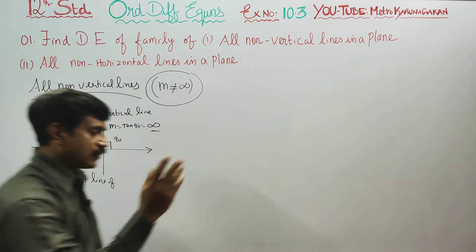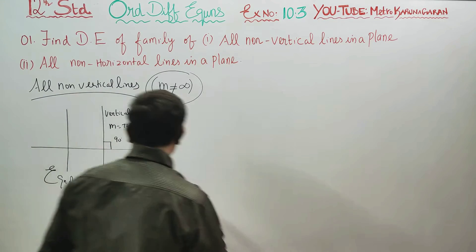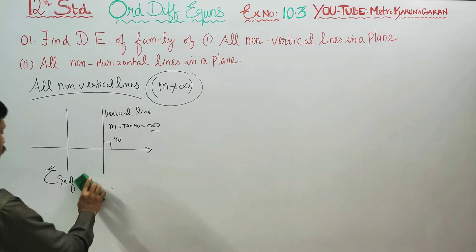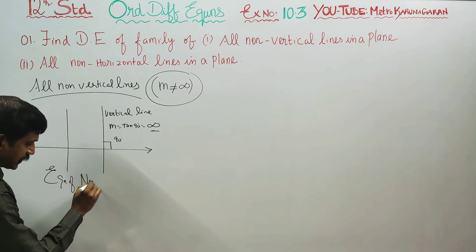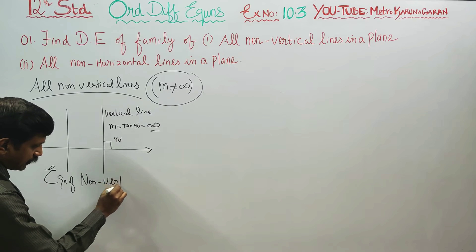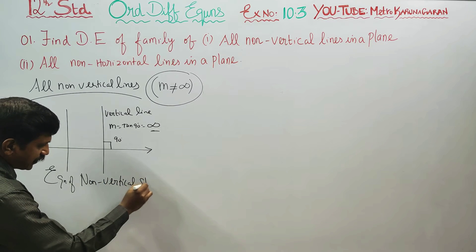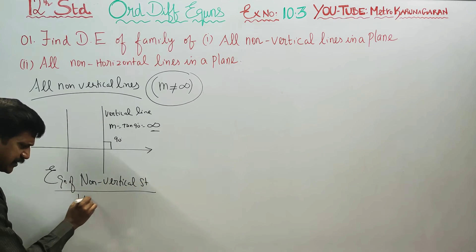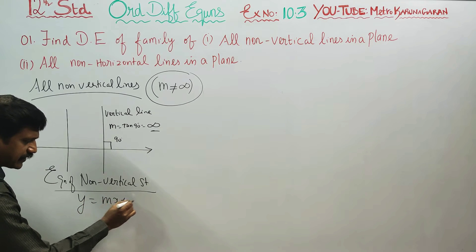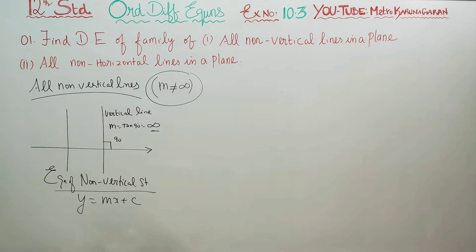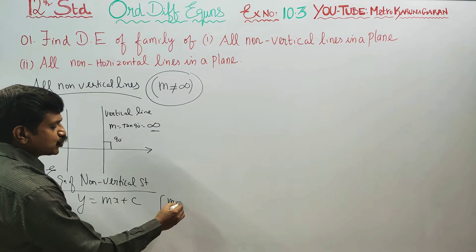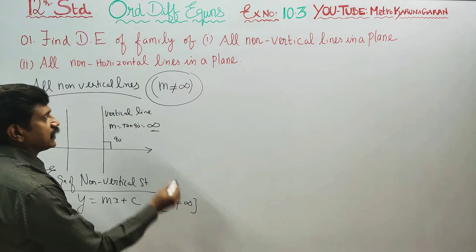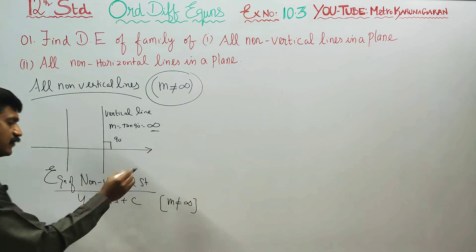The equation of non-vertical straight lines is y equals mx plus c. This is the general form. In this equation, m is not equal to infinity — that is what makes it a non-vertical straight line. If m equals infinity, it becomes a vertical line.